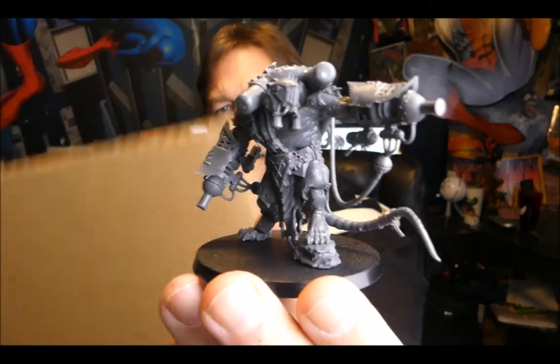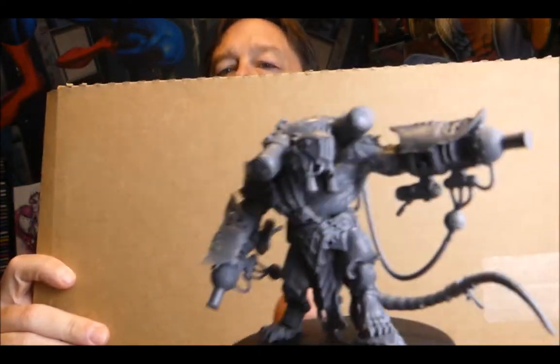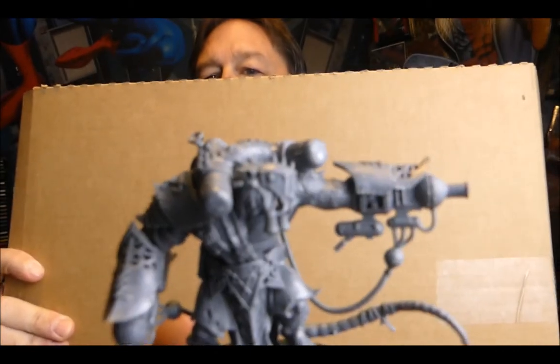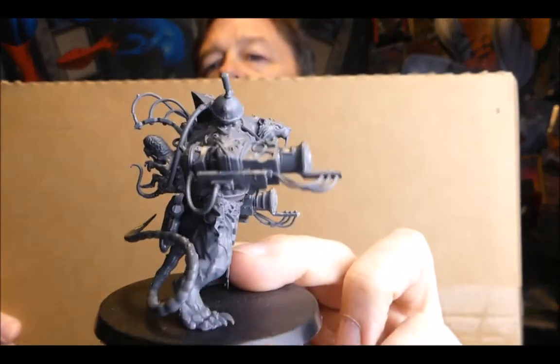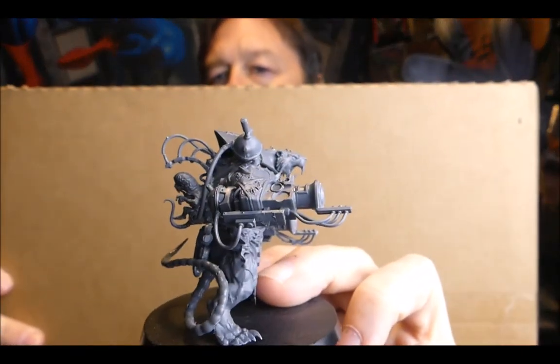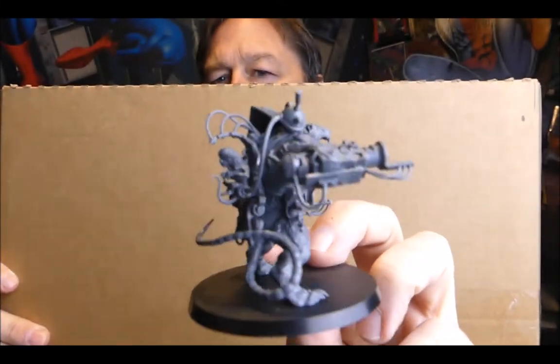We started looking at ways to make these guys. Here's what the Skaven looks like with a warp fire projector built. That's what the warp fire projector looks like. We basically built the model by cutting off everything right there, and we're gonna try and create something that looks like a warp fire projector using bits and stuff you can get from the hardware store.